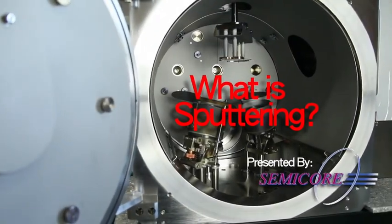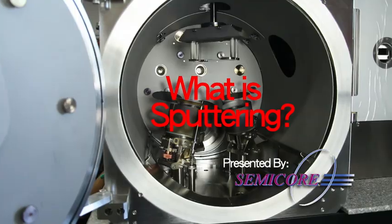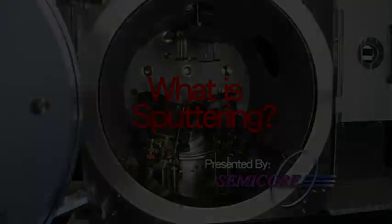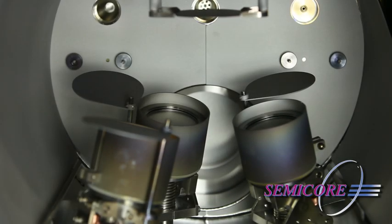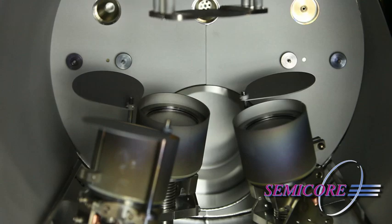So exactly how does the sputtering process work? First, your coating materials are placed on a magnetron in a solid form called a target.